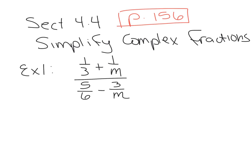There are actually two ways to simplify this. You can look at it as a big division and rewrite it horizontally as 1/3 plus 1 over M divided by 5/6 minus 3 over M, then use common denominators, keep-change-flip. It's a long way but it works. I'm going to go with a shorter route — if you know the longer way and get the correct answer, that's fine, but I'll show the shorter way.